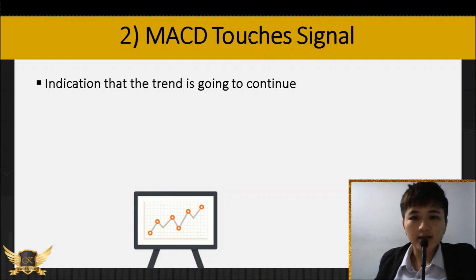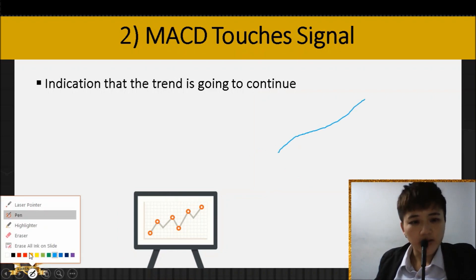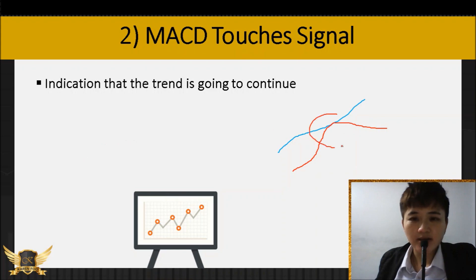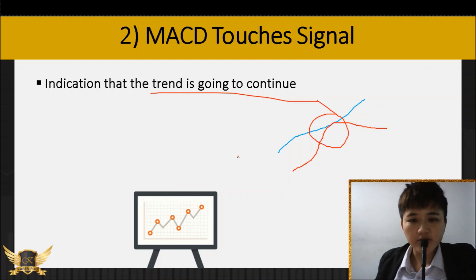The second way to evaluate MACD is when the MACD touches the signal line without crossing over. So instead of crossing over, the signal line comes up, touches the MACD line, doesn't cross over, and then continues. This touch means the trend is going to continue — if you have a bullish trend and MACD is above the signal line and it comes and touches, the bullish trend will continue.